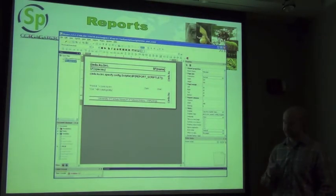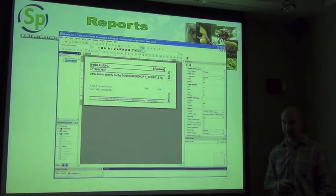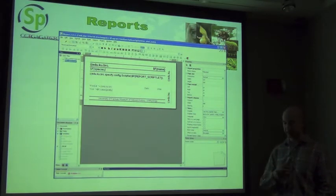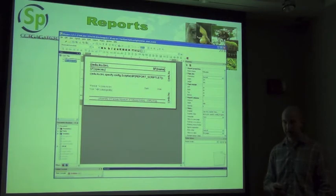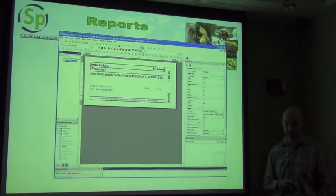You can create very complex reports for Specify in terms of labels, loan forms, gift forms, and all of those kinds of things. We use a separate third-party application called iReports for creating those. The process involves creating a query within Specify of all the fields you want on your report, then linking that query to the report so you can drag and drop all of the fields onto the label layout and set it up exactly the way you want.